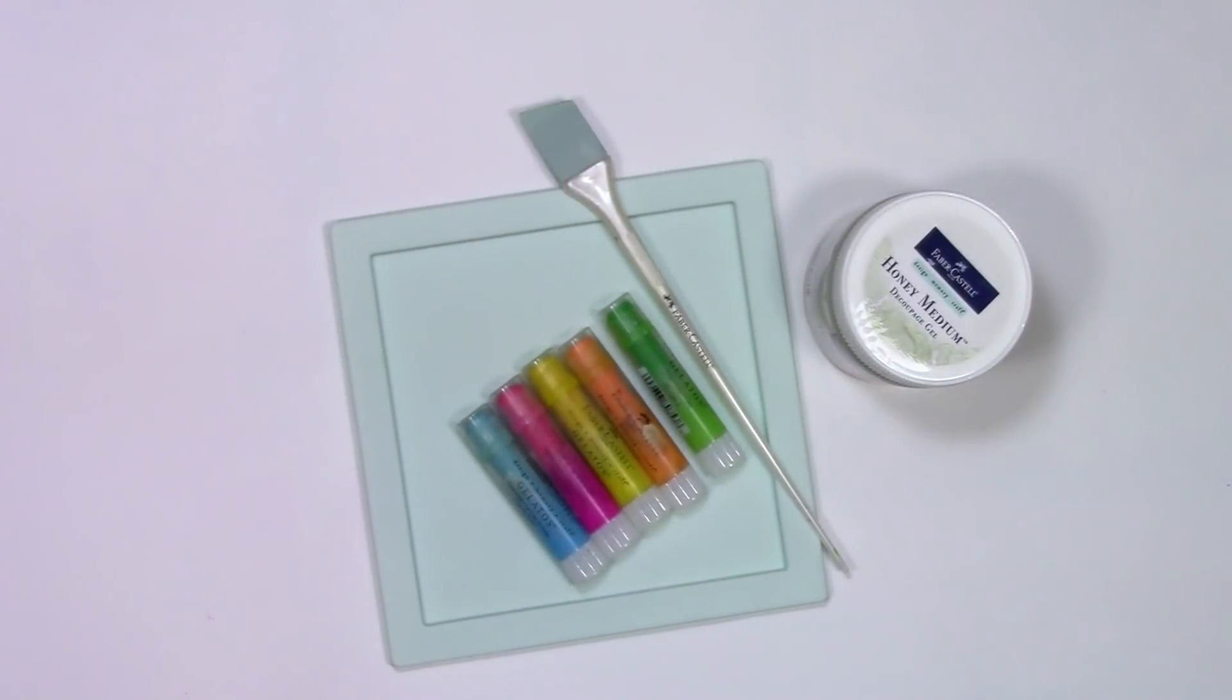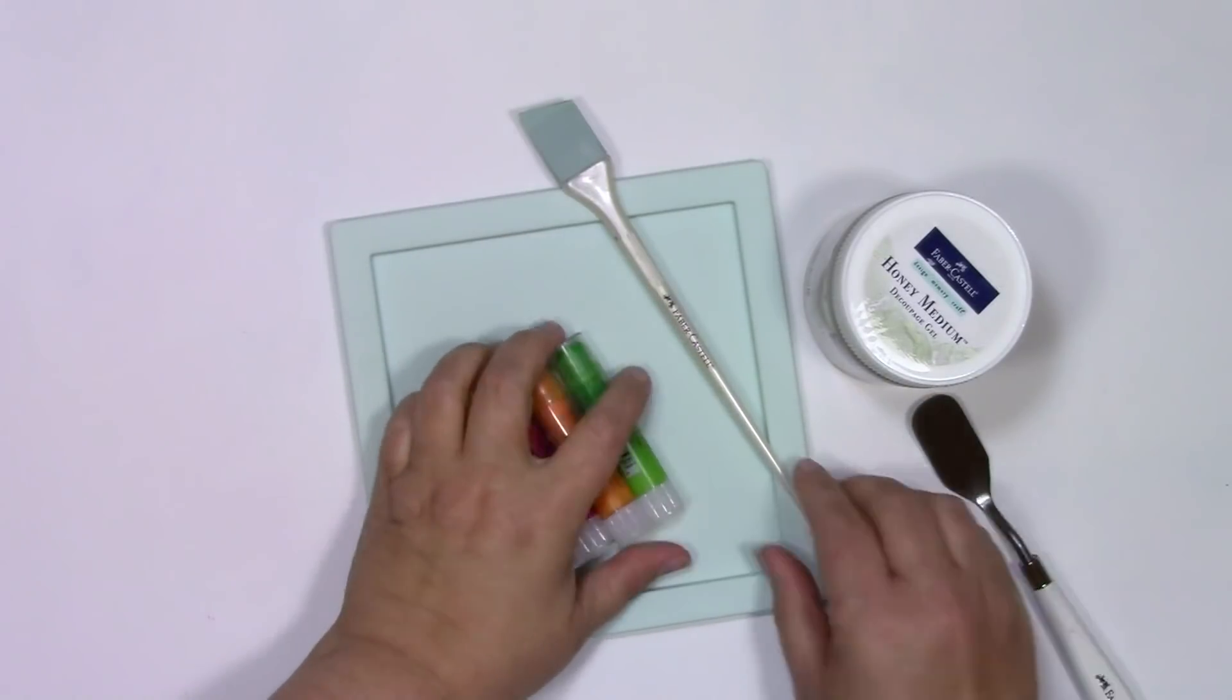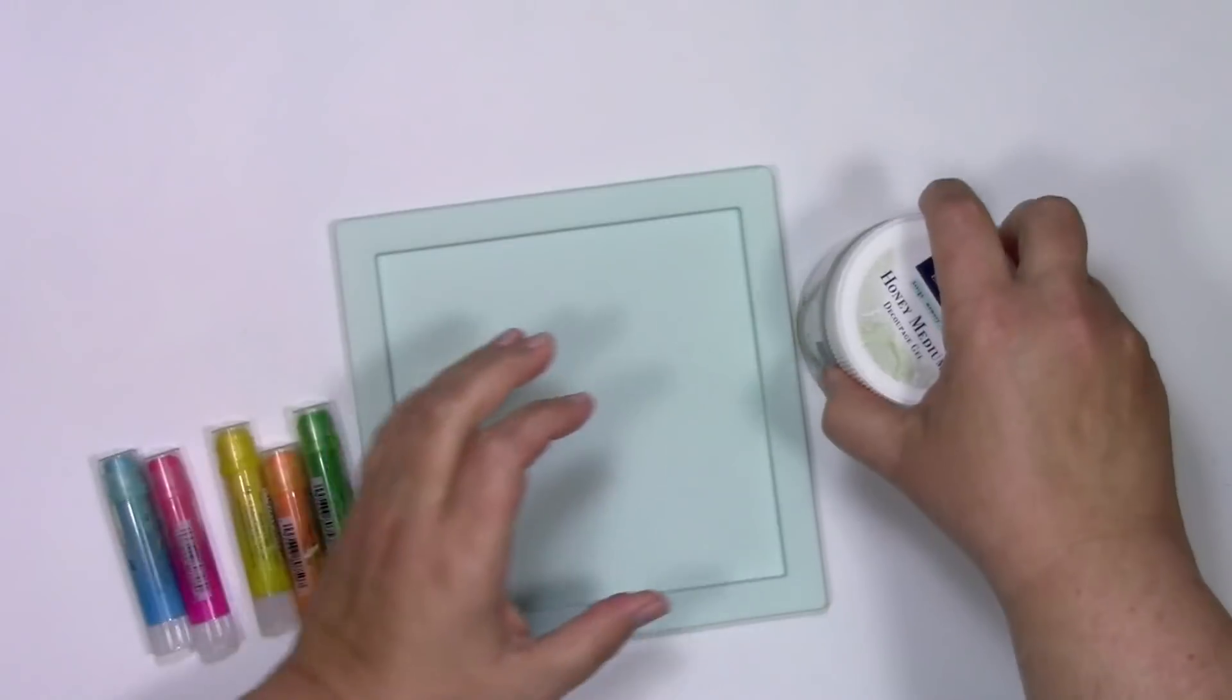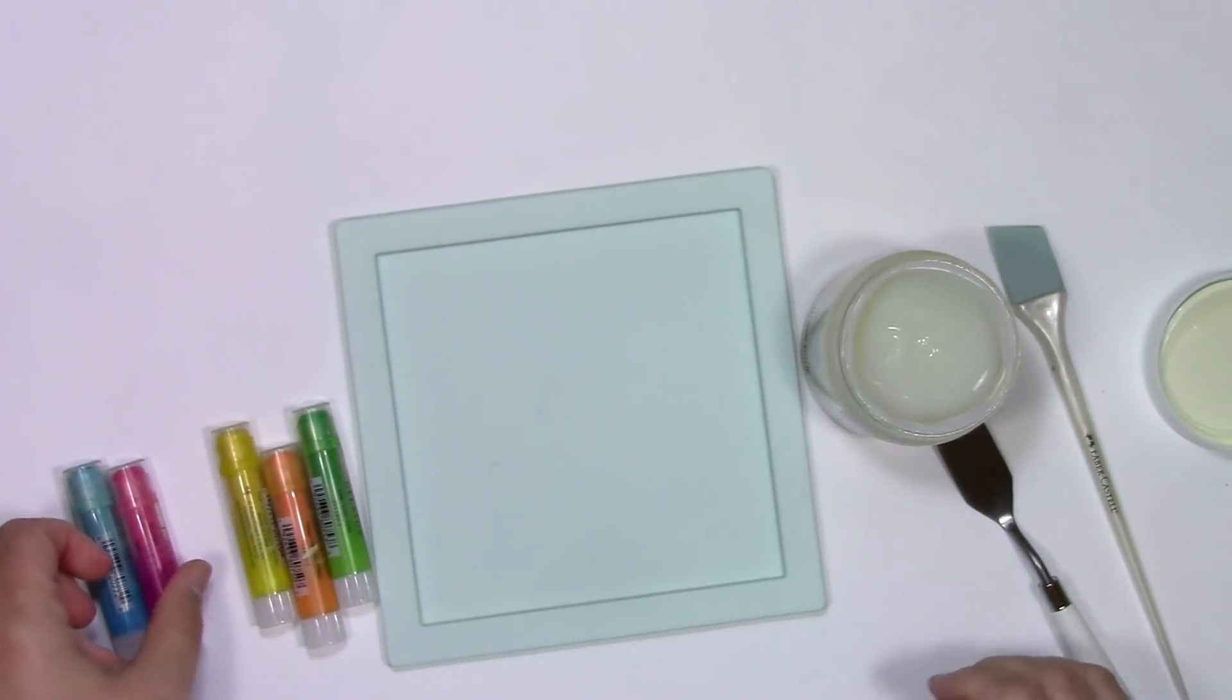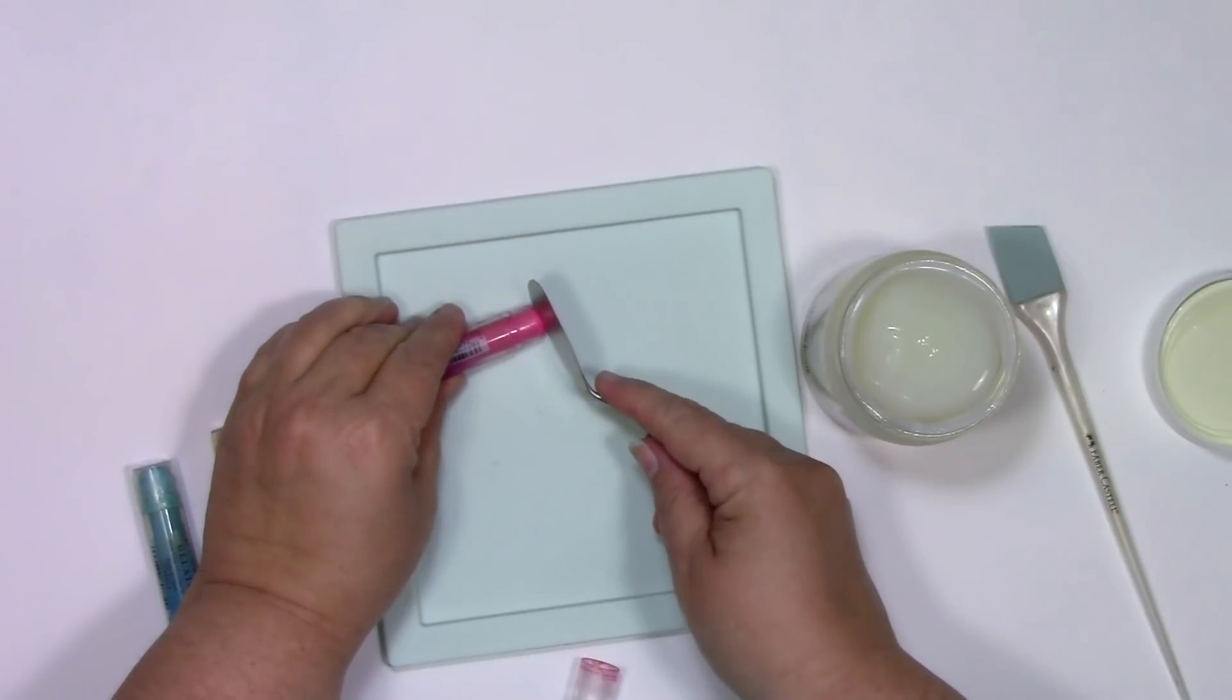The honey medium comes clear, and we're going to turn it into the rainbow with these tools and some gelatos. The silicone mat here and the silicone spatula come in the honey medium kit, and the gelatos that I'm using are from the Bright Collection.